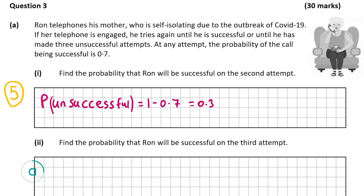To work out the probability of him being successful on the second attempt, we take it that he was unsuccessful on the first attempt — probability 0.3 — and successful on the second attempt — probability 0.7. Multiplying both together gives 0.21. So the probability of him being successful on the second attempt is 0.21.